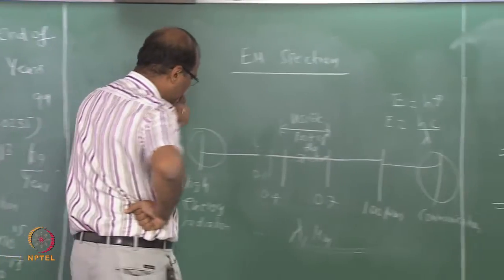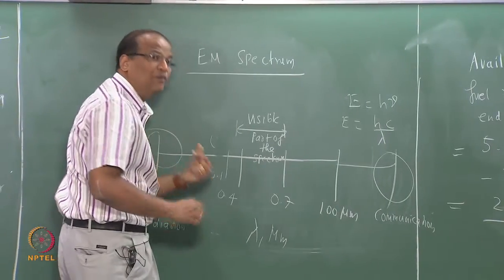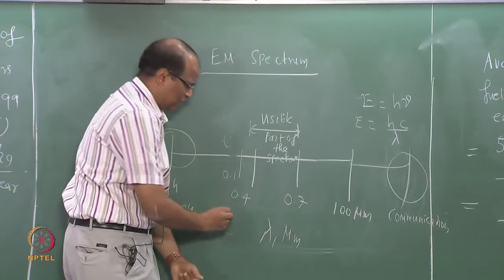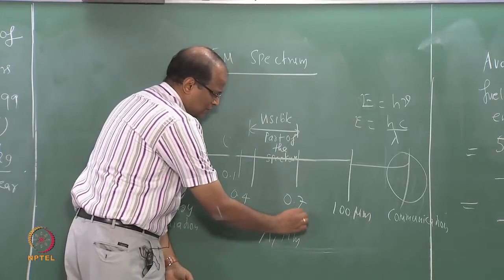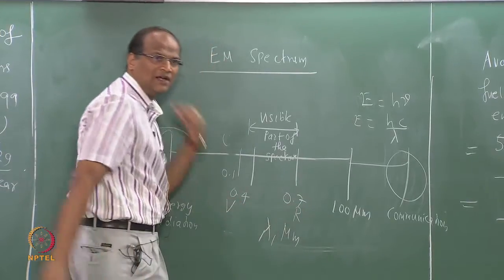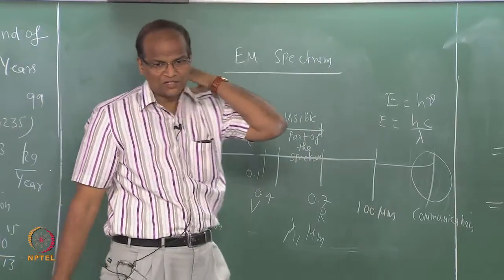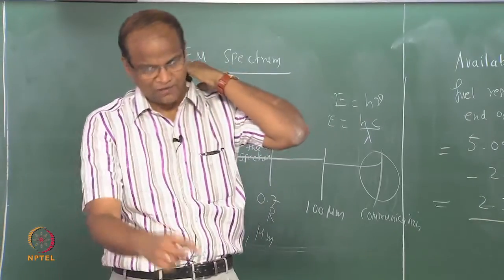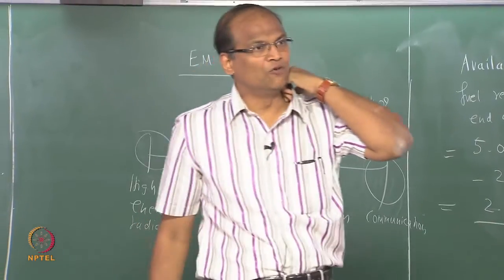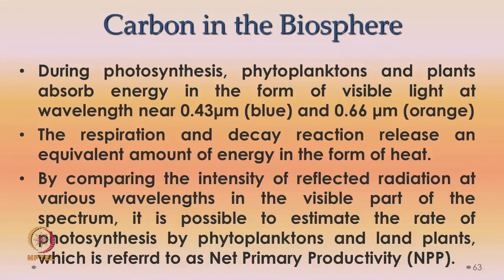The visible range: 0.4 micrometers is violet/blue, 0.7 micrometers is red. So photosynthesis absorption is at 0.43 micrometers — which is blue — and 0.66 micrometers — which is orange, very close to red.